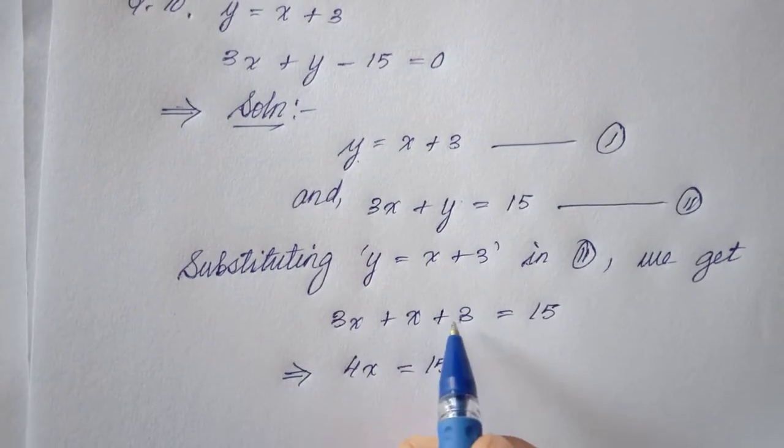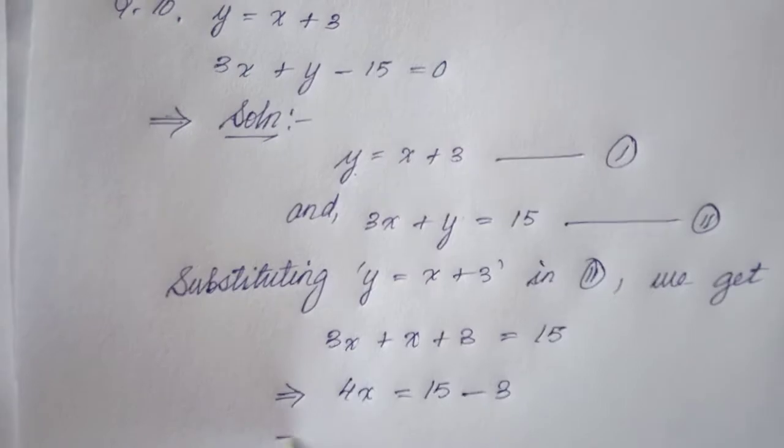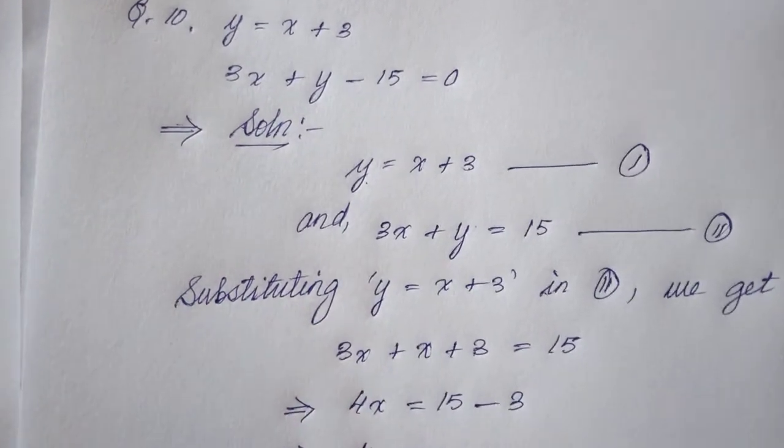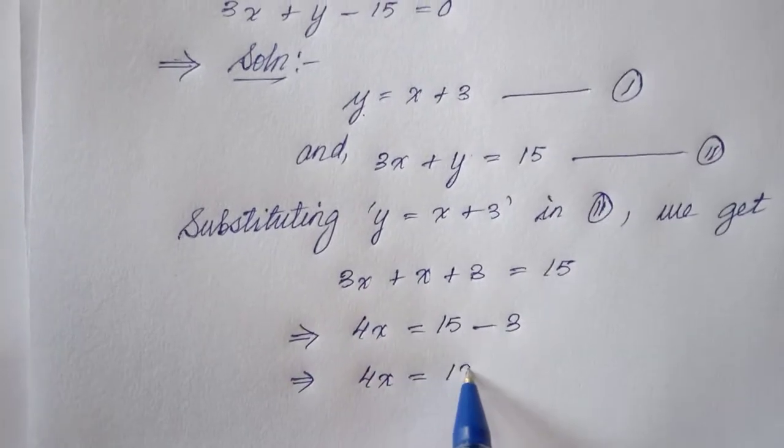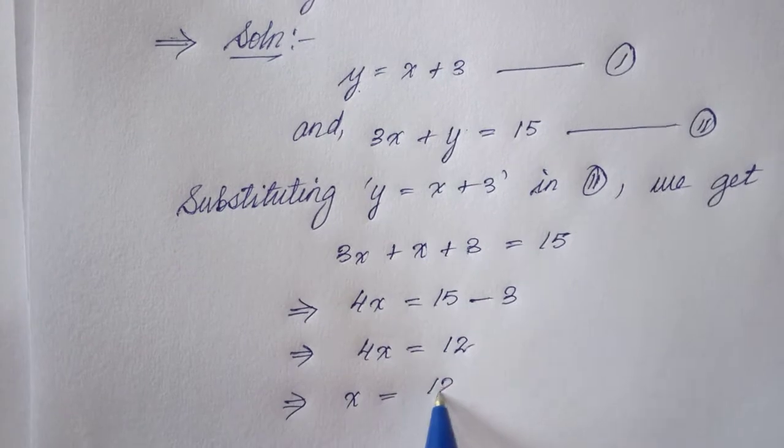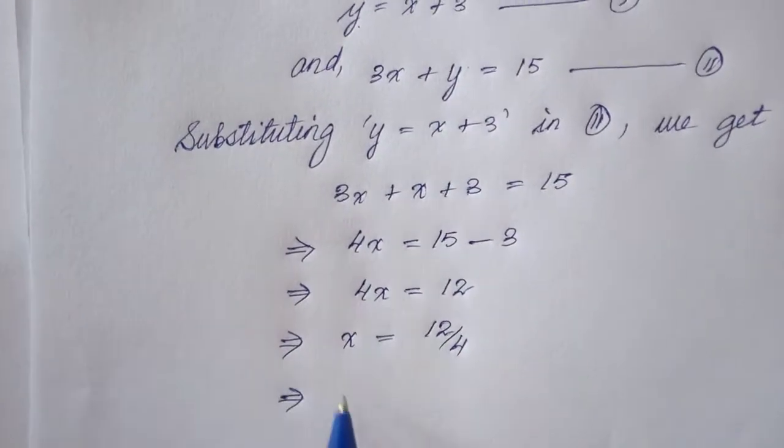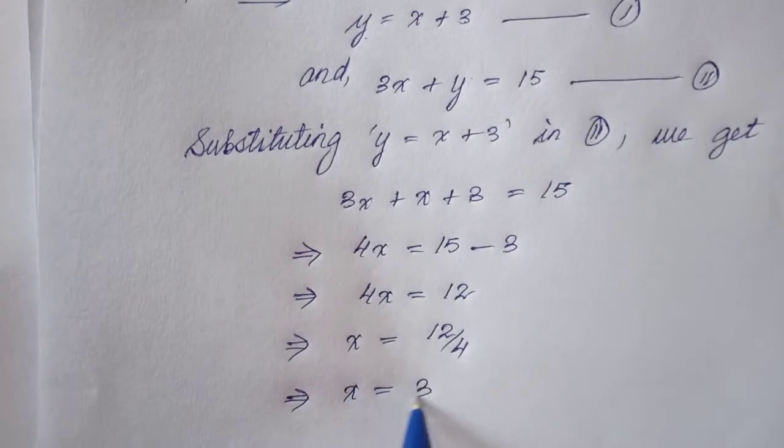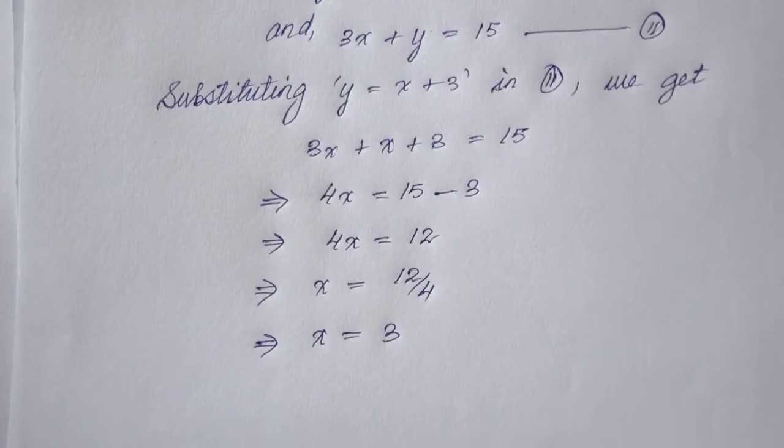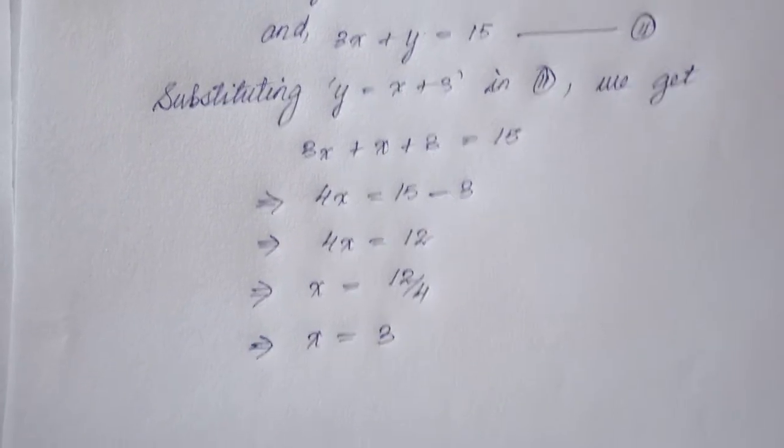This is a constant term, so it has to move to the right hand side, minus 3. That is, 4x is equal to 15 minus 3 is 12. Then, the value of x is 12 by 4, which in turn gives us 3. So it's very simple. We get the value of x is 3 here. It's very simple.